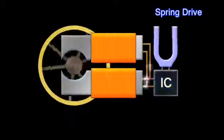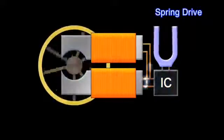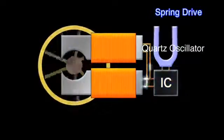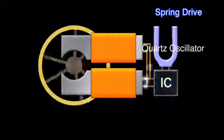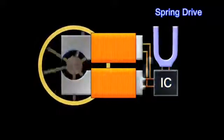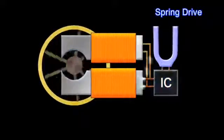The minimal electric power operates IC and vibrates quartz, which produces highly accurate oscillation. This accurate oscillation is used to regulate the force of electromagnetic braking.